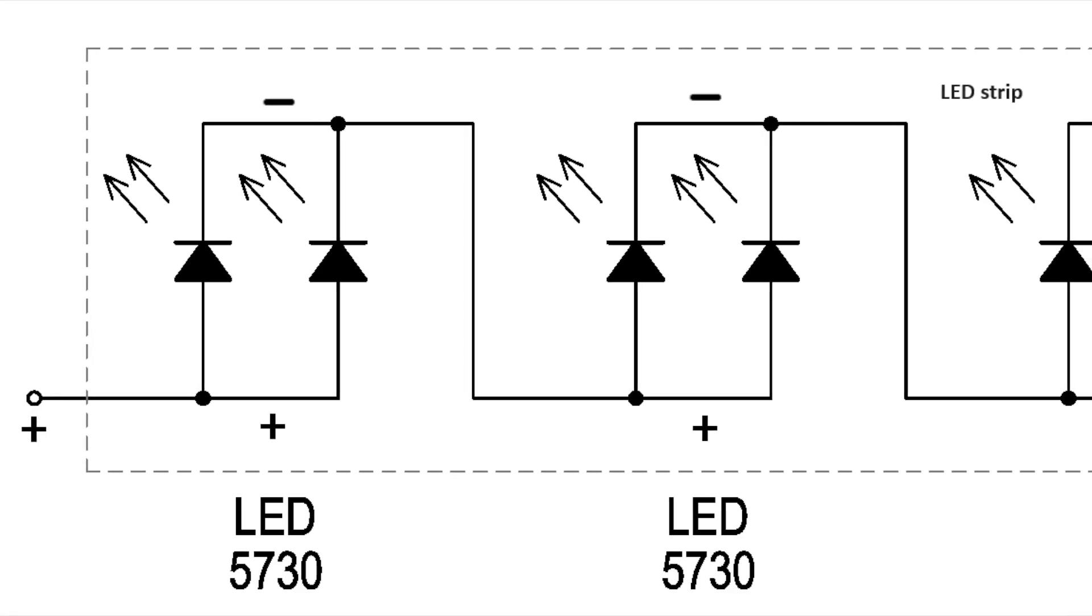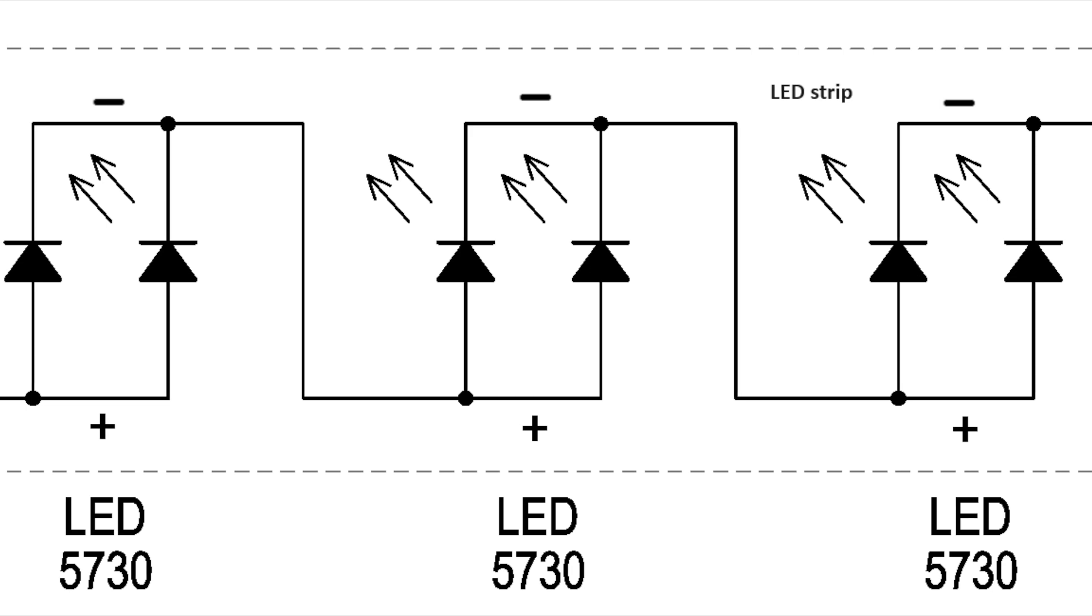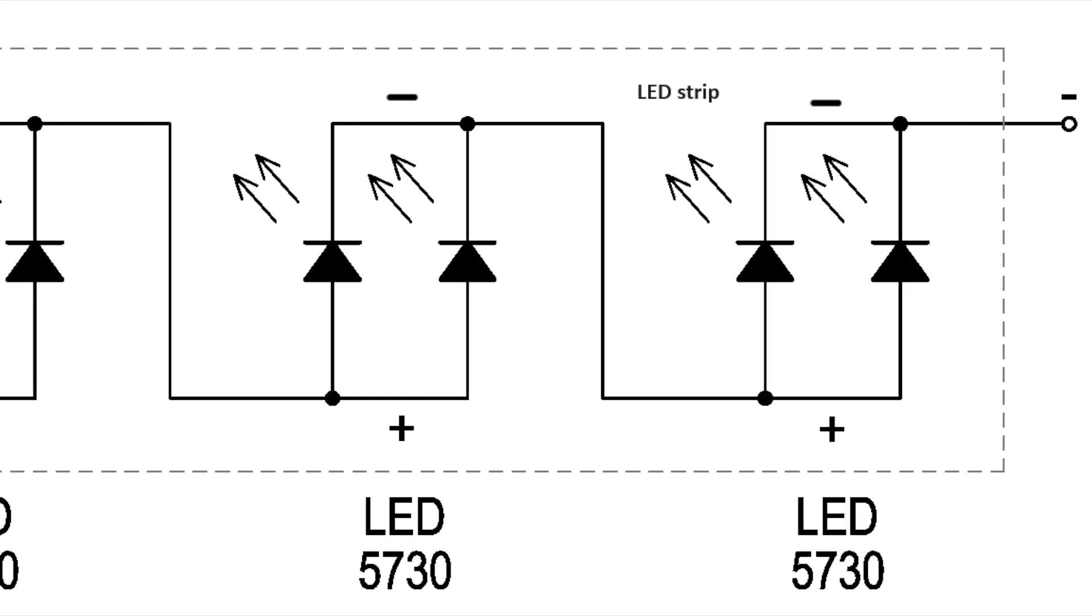Two LEDs light up at the same time. This means that they are connected in parallel. This way we understand the entire LED wiring diagram in the light fixture.